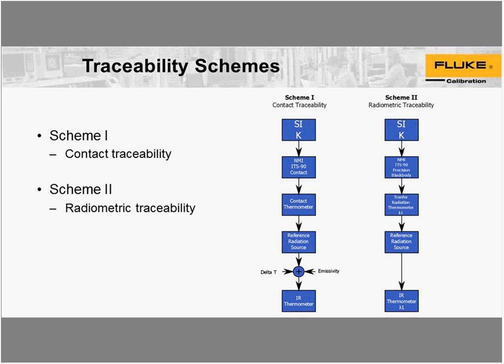If the wavelengths are not similar, we lose traceability. For example, if your transfer standard is a 3.9 micrometer instrument and your IR thermometer is 8 to 14 micrometers, then you should not be doing that calibration — you don't have traceability.